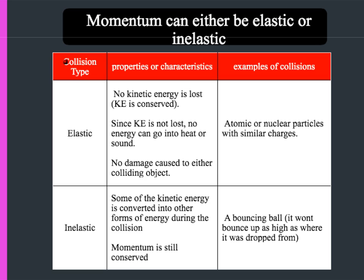To compare elastic and inelastic: in elastic collisions no kinetic energy is lost — kinetic energy is conserved, no energy goes into heat or sound, and there is no damage caused to either colliding object. This is far more common with atomic or nuclear particles. In an inelastic collision, some kinetic energy is converted into other forms, usually heat and sound, but momentum is still conserved. Examples include a bouncing ball and a Newton's cradle, where each collision causes a passing on of energy but some is lost as heat and sound.